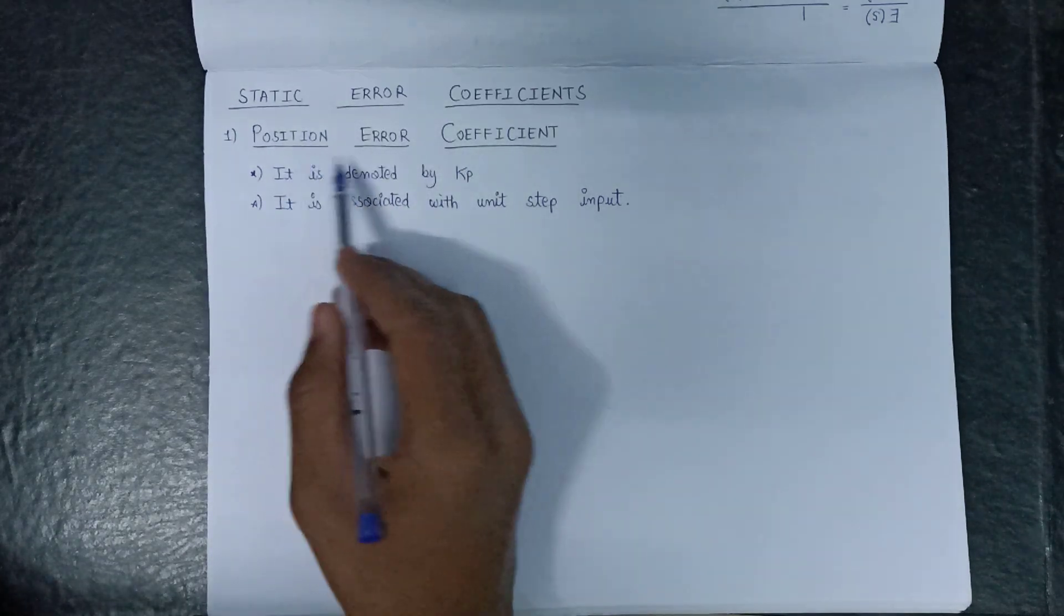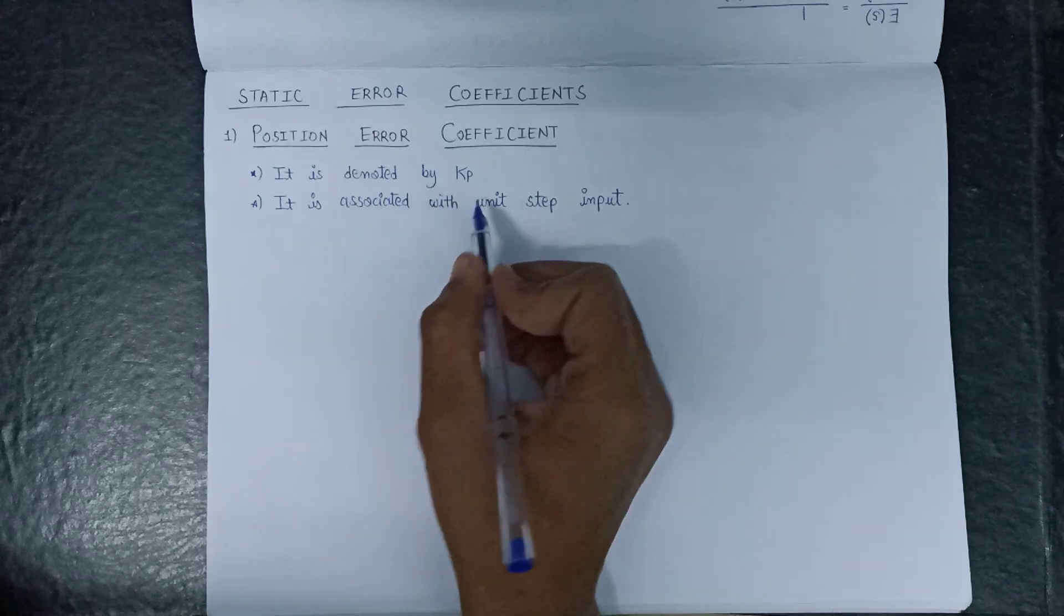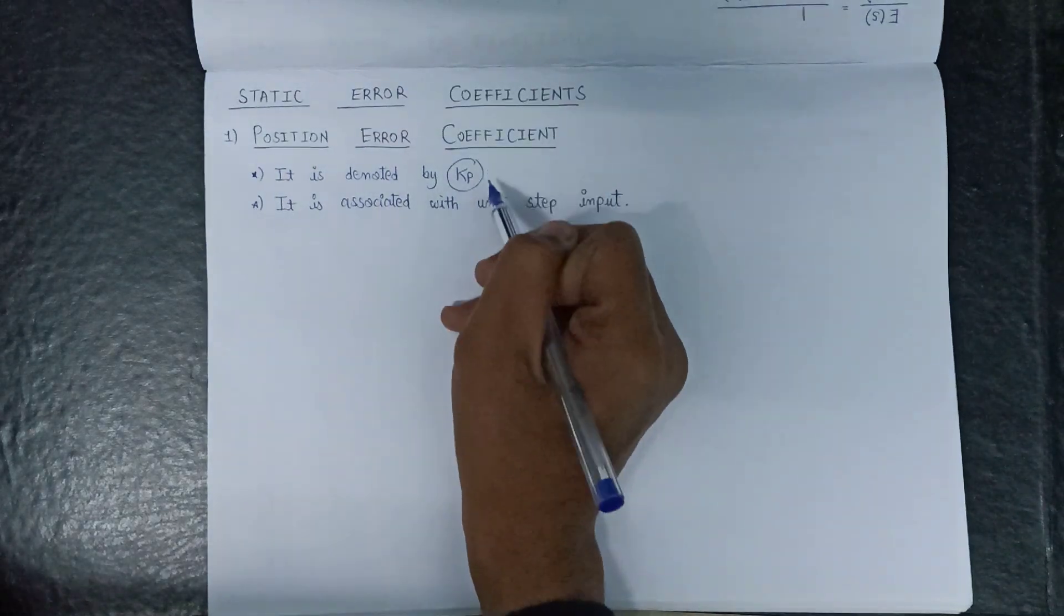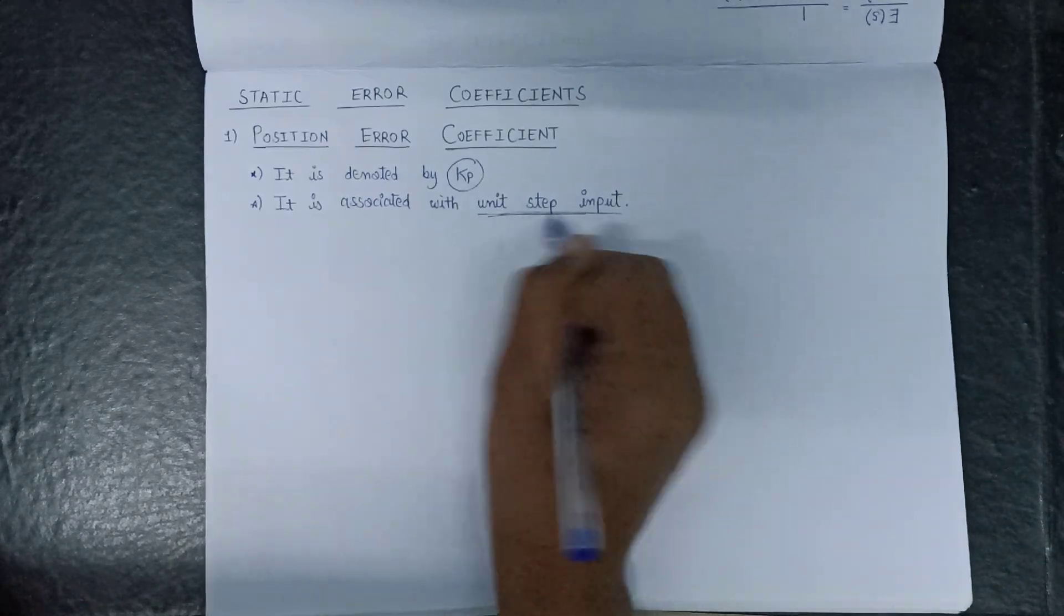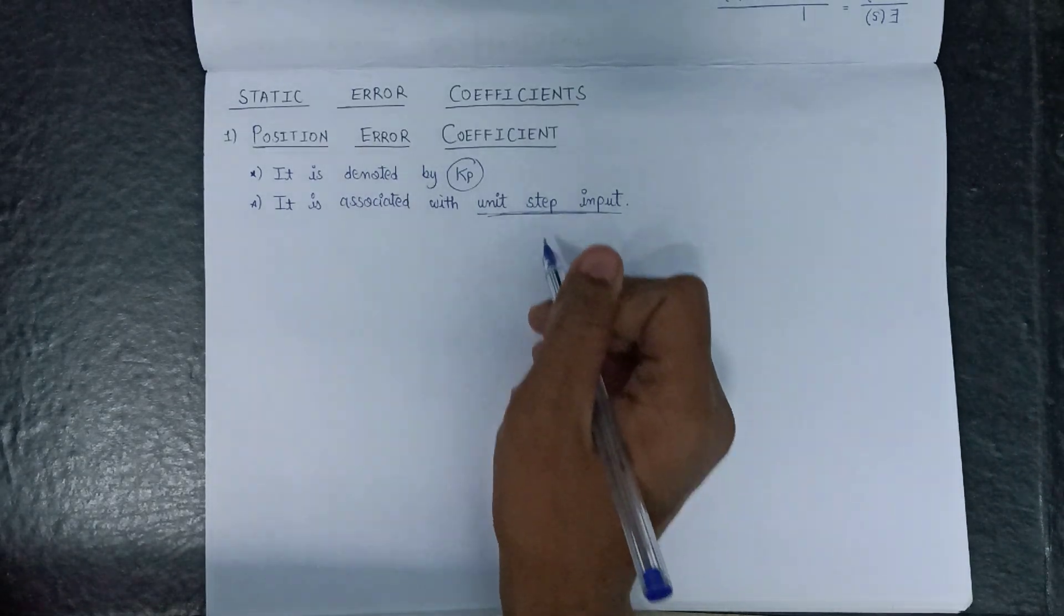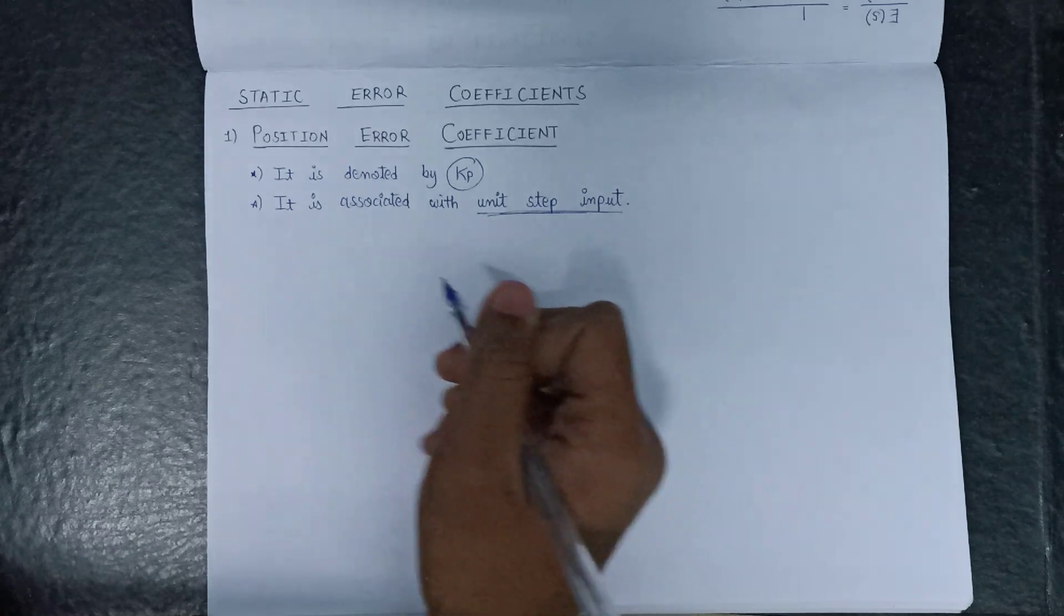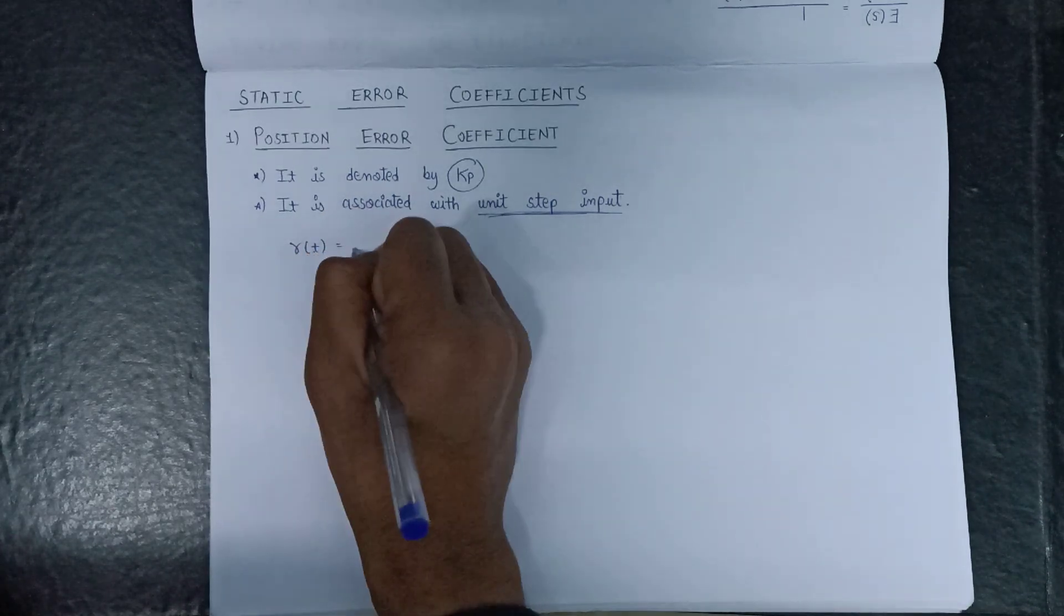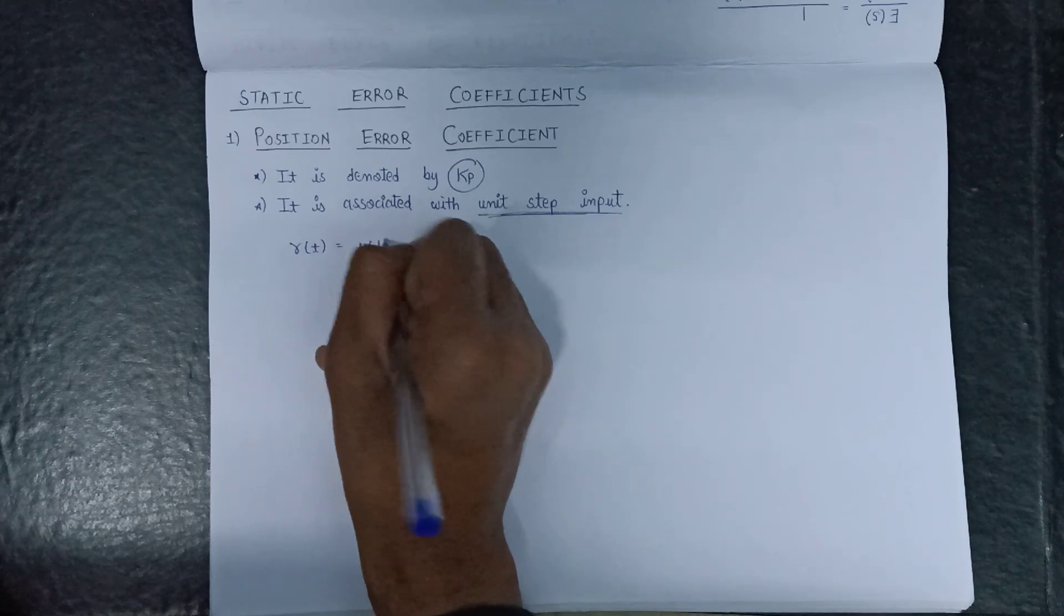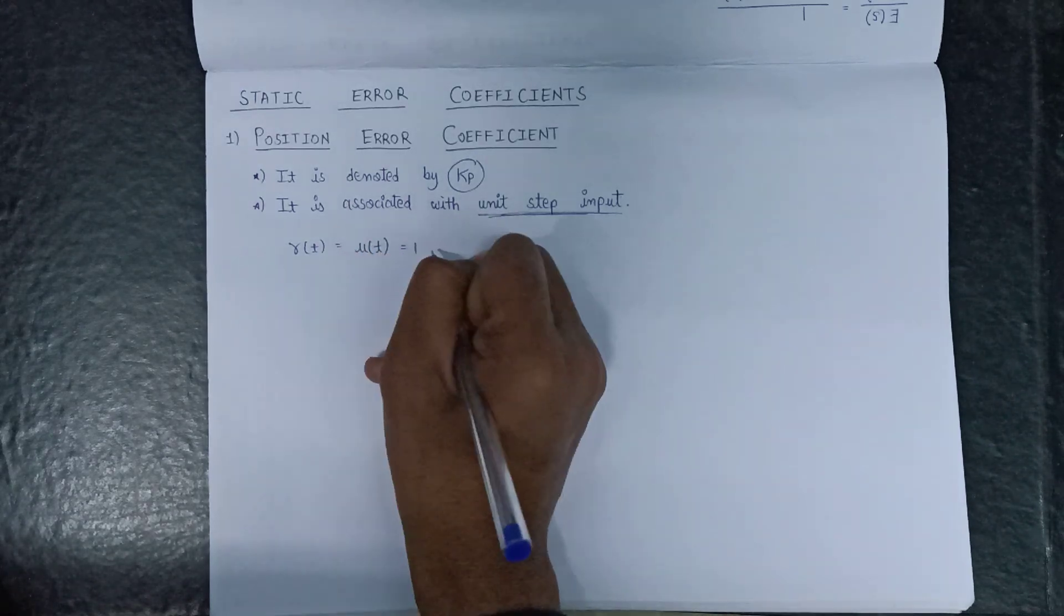The position error coefficient is denoted by the symbol Kp and it is associated with unit step input. So if the unit step input is applied, then our input R will become unit step, i.e., u equals to 1.